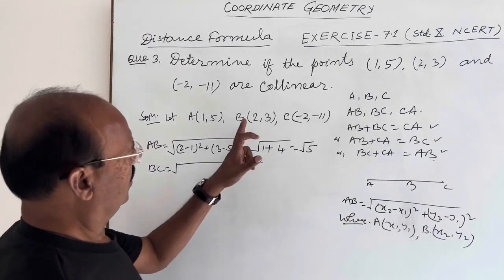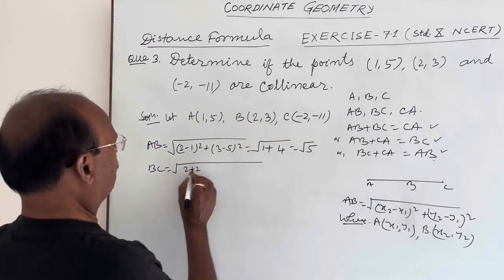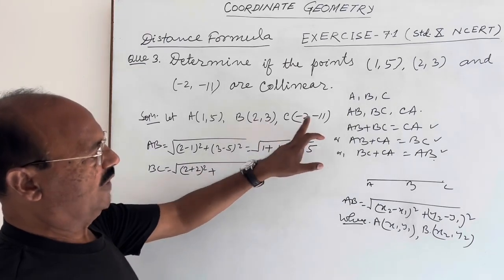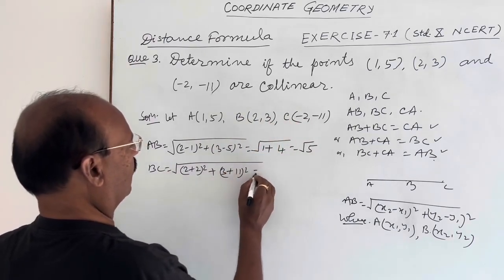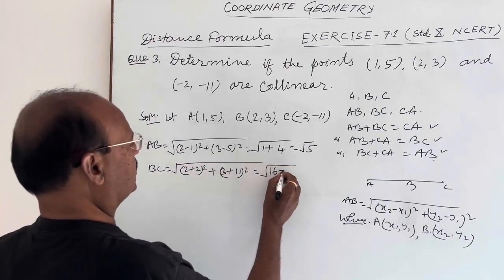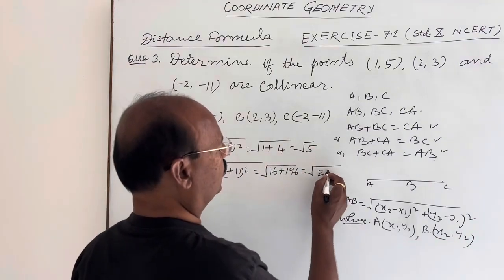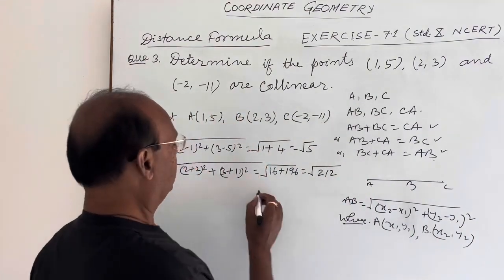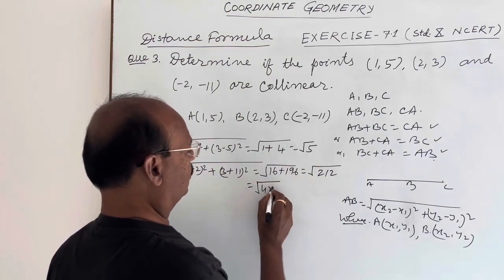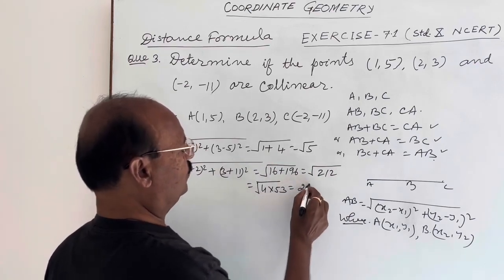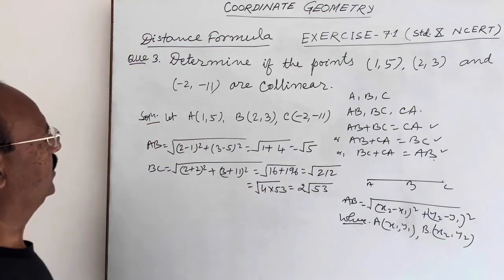Now let us find BC using the same distance formula: BC = √[(2 − (−2))² + (3 − (−11))²] = √[(4)² + (14)²] = √[16 + 196] = √212. We can simplify: 212 = 4 × 53, so √212 = 2√53. This is the length BC.